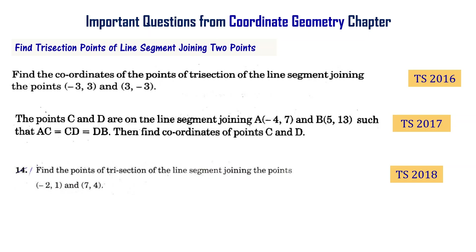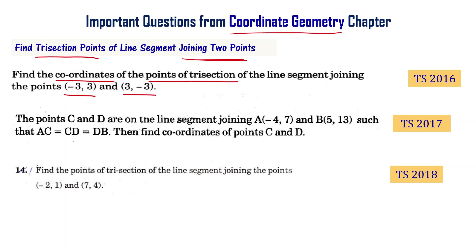Finding the trisection points of a line segment joining two points is one of the important topics from coordinate geometry. Find the coordinates of the points of trisection of the line segment joining the points minus 3 comma 3 and 3 comma minus 3 — this is a Telangana final exam 2016 question.